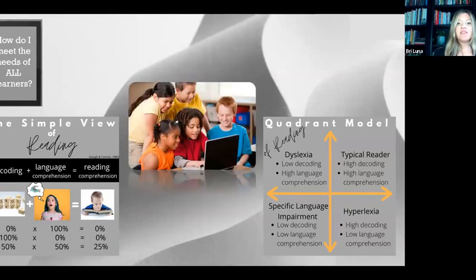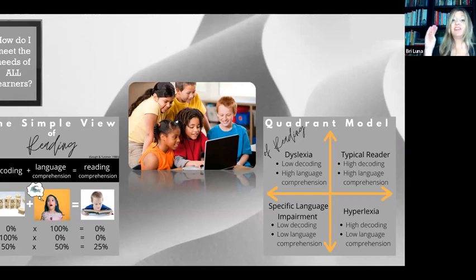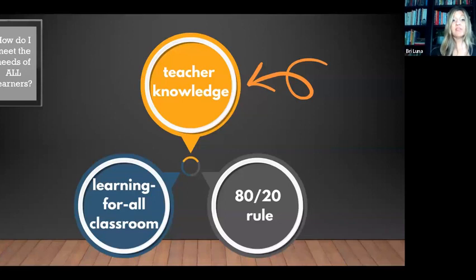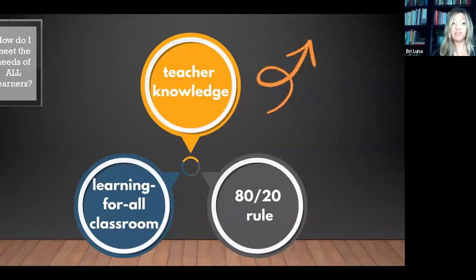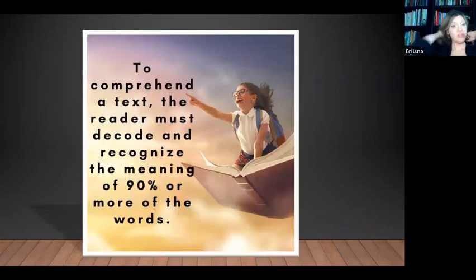We know that kids sitting in our classroom can have huge discrepancies in skills and knowledge. In a third grade classroom, I can think of a kid who right now is very much an emergent reader working on foundational skills. And I can also think of a kid in that same third grade class who I could put anything in front of and they could read and comprehend it. So how does the teacher meet the needs of such incredibly varied skills? The three key components are: teacher knowledge, learning for all classrooms, and the 80-20 rule.